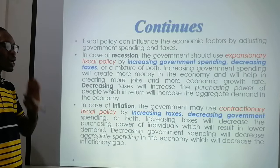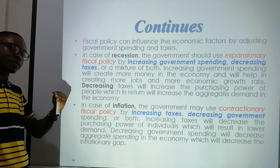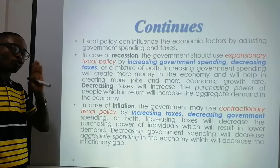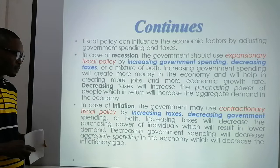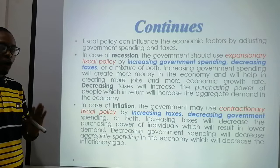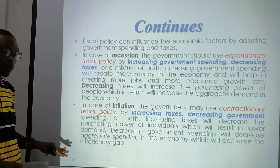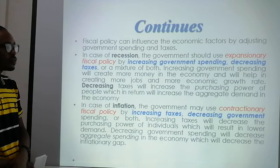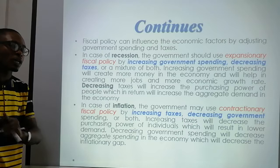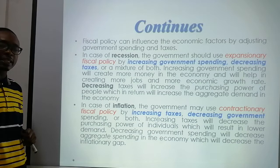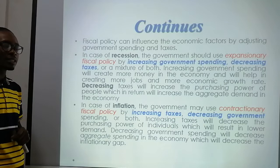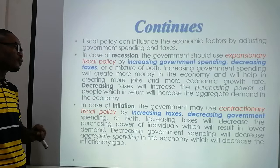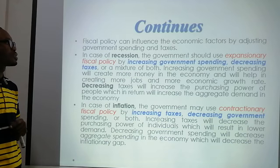In case of inflation, the government may use contractionary fiscal policy. Where prices of goods and services are increasing, the government must use contractionary fiscal policy to manage the affairs of the state — by increasing taxes, decreasing government spending, or both. Increasing taxes will decrease the purchasing power of individuals, which will result in lower demand, and hence inflation will go down. In case of inflation, contractionary fiscal policy is needed.